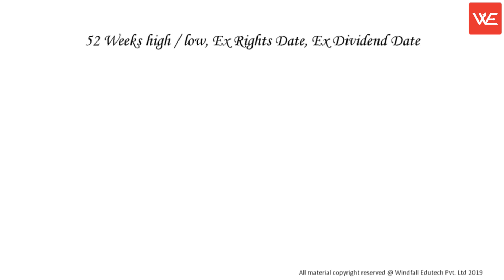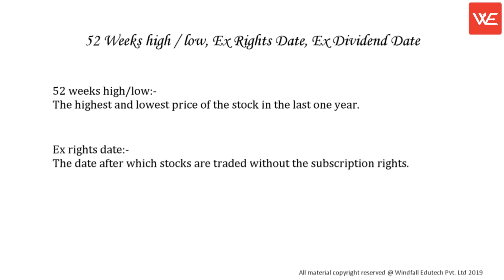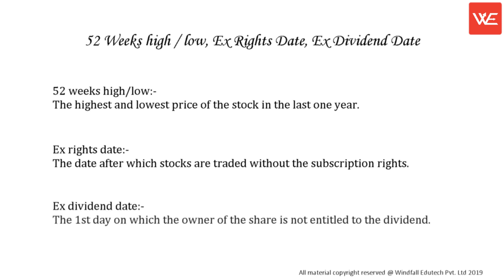52 Weeks High, Low, X Rights Date, X Dividend Date. X Rights Date is the date after which stocks are traded without the subscription rights. X Dividend Date is the first day on which the owner of the share is not entitled to the dividend.